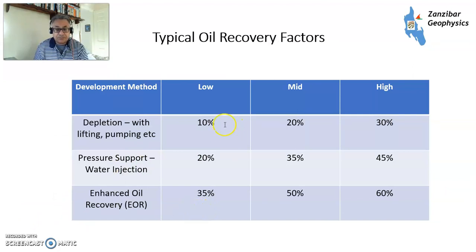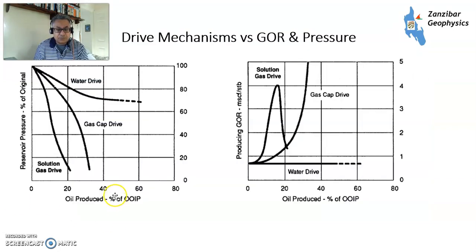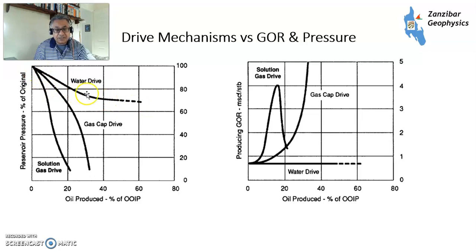What are typical oil recovery factors? With depletion — with lifting, pumping, etc. — 10% low case, 20% mid case, 30% high case. With pressure support from water injection: 20% mid if it's not really working, 35% to 40% mid case, 45% to 50% high case. Enhanced oil recovery: 35%, 50%, 60%. From the APG Wiki, with solution gas drive pressure falls off fairly rapidly. With gas cap drive it also falls off, capping out around 30-35%. With water drive you can get into the 50s or 60s with a lot of luck, typically around 35-40%, but pressure is maintained through voidage replacement by water.